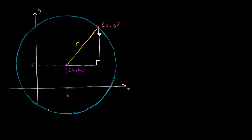If we can express the height of this vertical line and the width of this horizontal line in terms of the variables we've just put out, then we can relate those to r using the Pythagorean theorem. r is the hypotenuse of this right triangle.